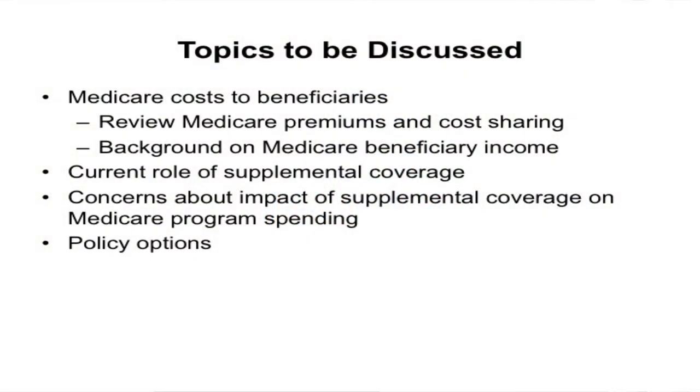I'm going to talk about Medicare costs to beneficiaries, which involves reviewing what you've already heard today about premiums and cost sharing. I'll put that in context by giving you some information on income of Medicare beneficiaries, talk about the role of supplemental coverage and concerns and policy issues about the impact of supplemental coverage on underlying Medicare program spending, and then the policy options that have been in debate.